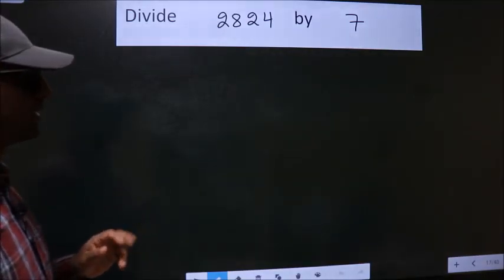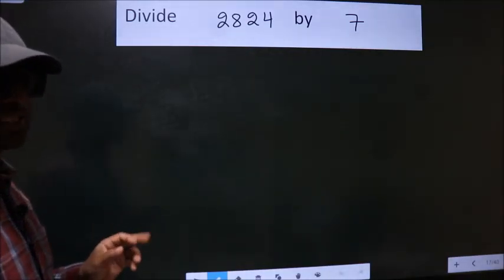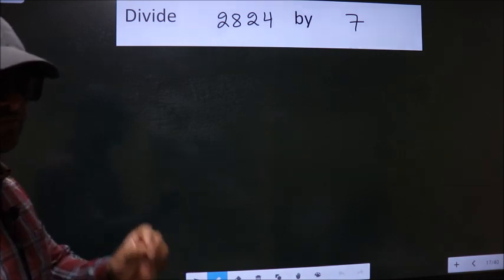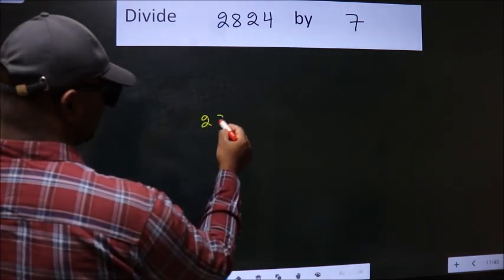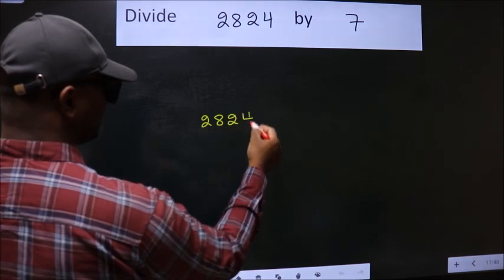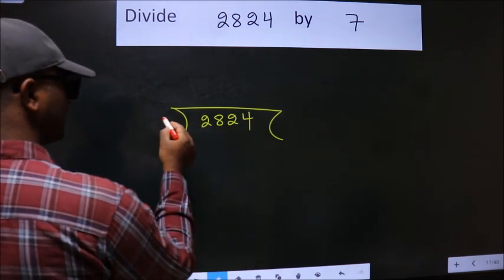Divide 2824 by 7. To do this division, we should frame it in this way: 2824 here, 7 here.